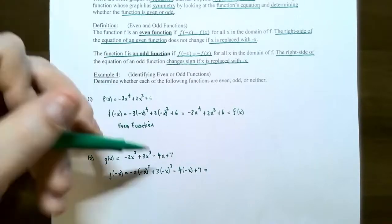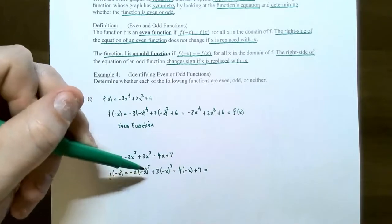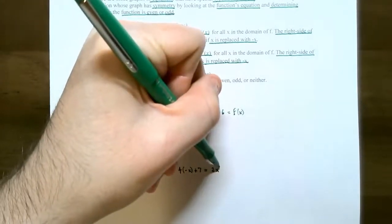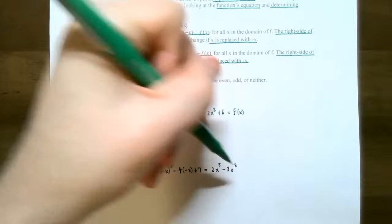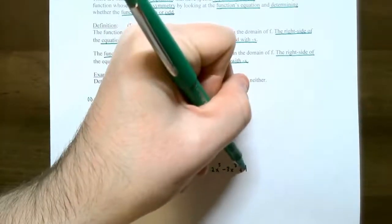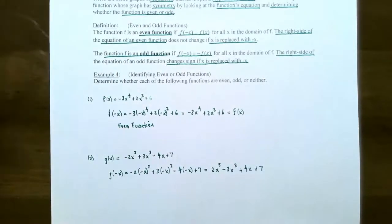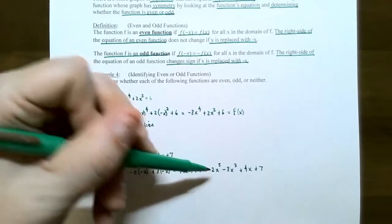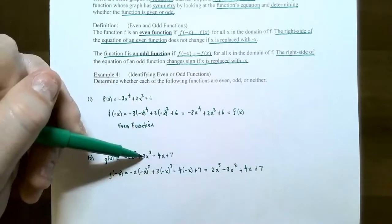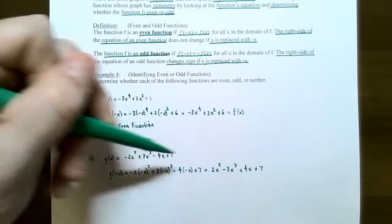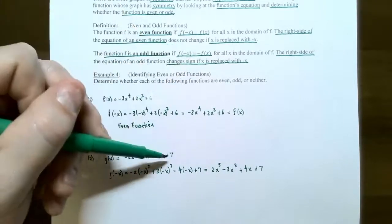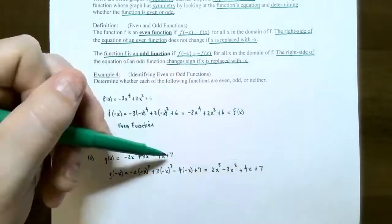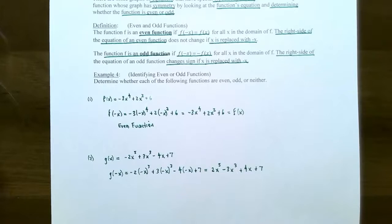Let's count the negative signs. For the first term, (negative x) raised to the fifth power gives 5 negatives, plus the negative on the outside — that's 6 negatives total, giving positive 2x⁵. Then 3 times (negative x) cubed has 3 negatives, giving negative 3x³. Negative 4 times negative x is positive 4x. And positive 7 stays the same. Comparing: the first term changed from -2x⁵ to +2x⁵, the second from +3x³ to -3x³, the third from -4x to +4x — so the signs all flipped — but the last term +7 stayed the same. That's a combination of changing signs and staying the same.